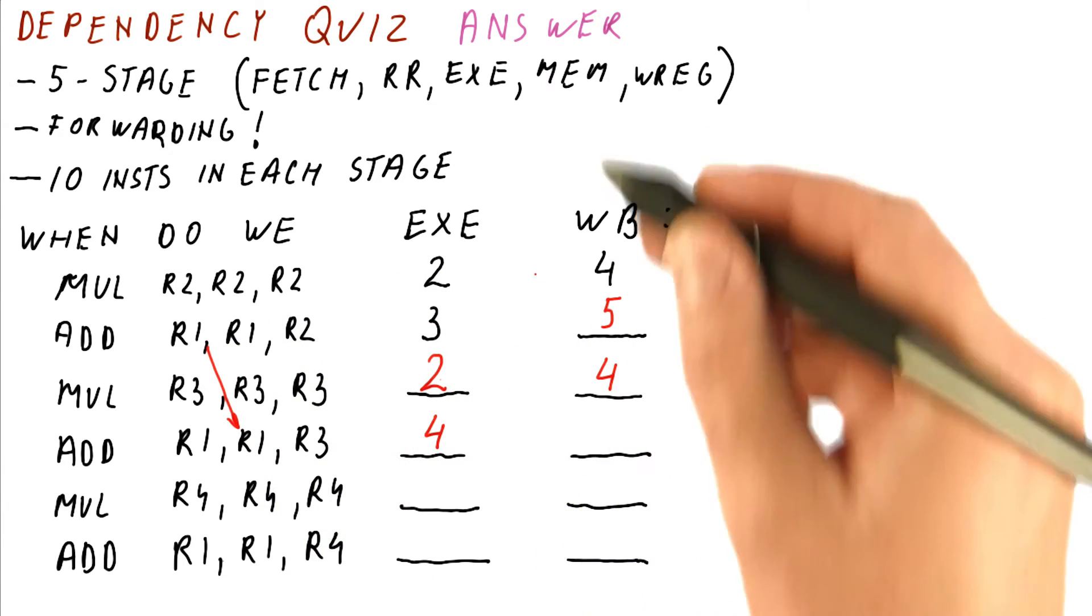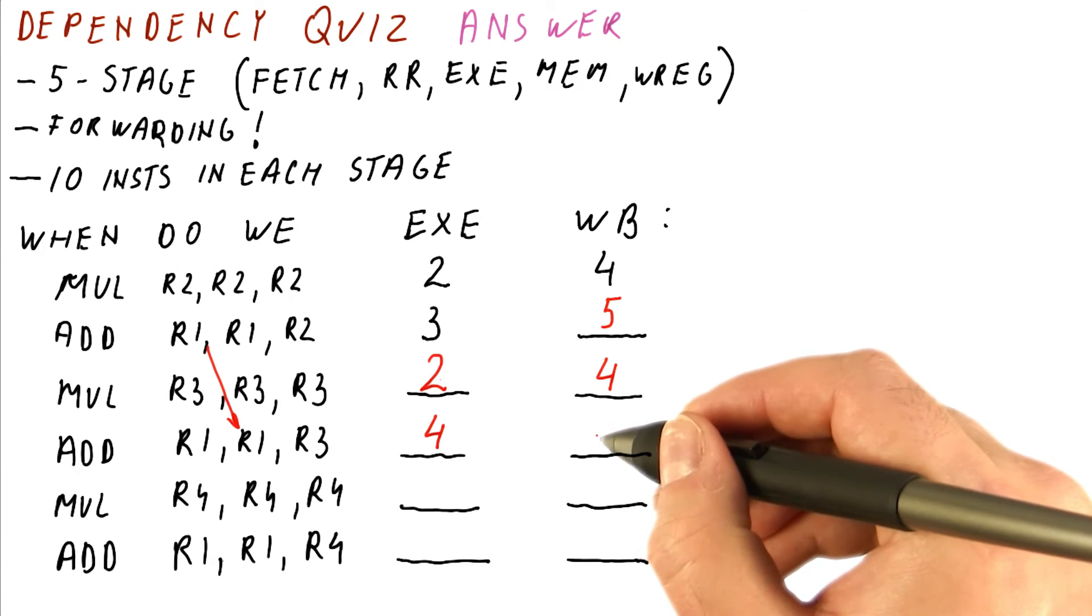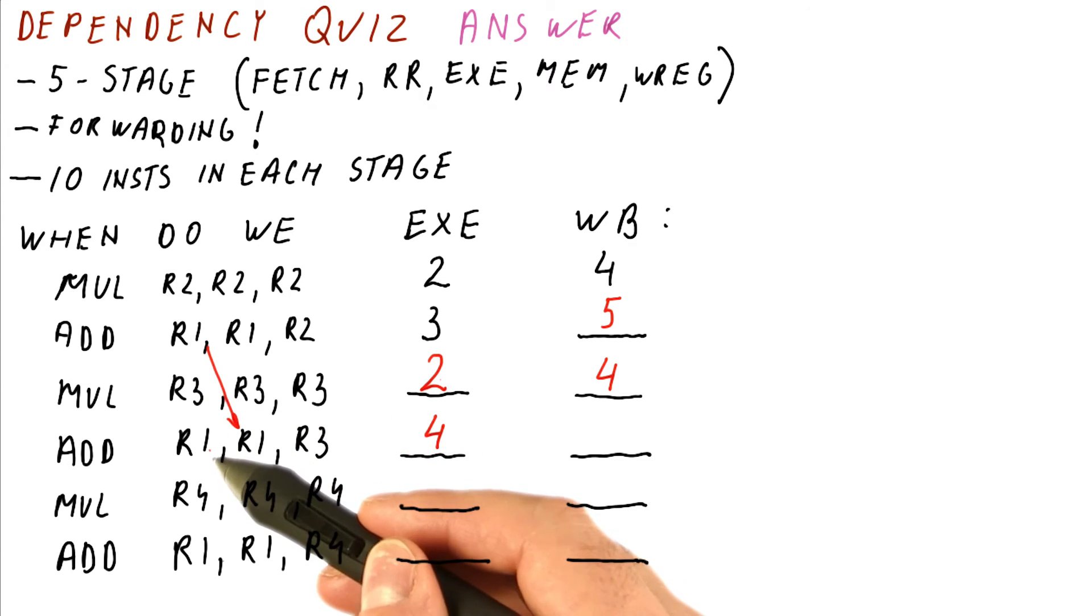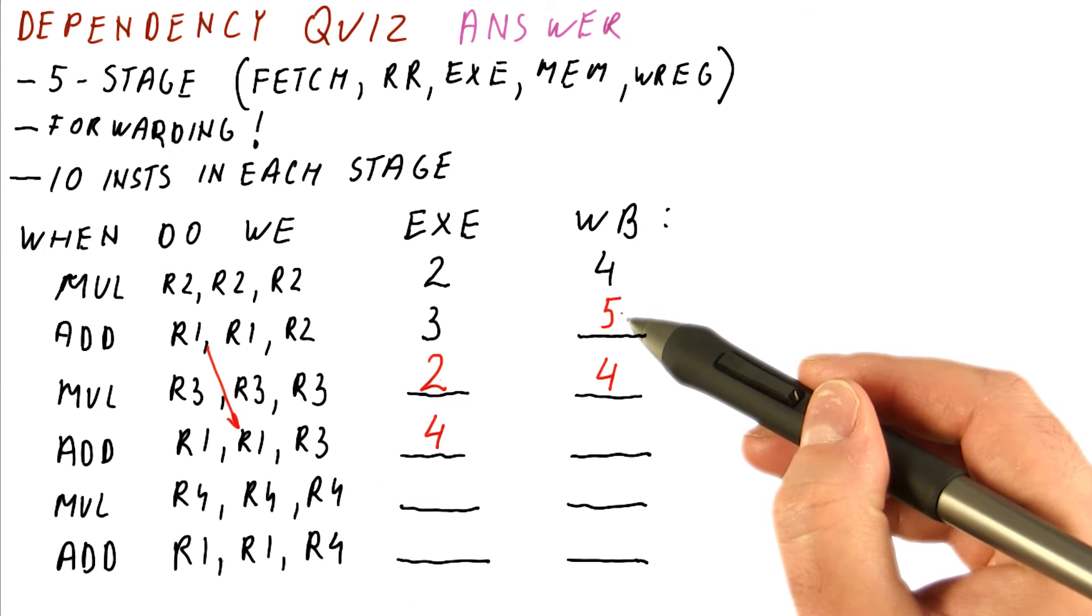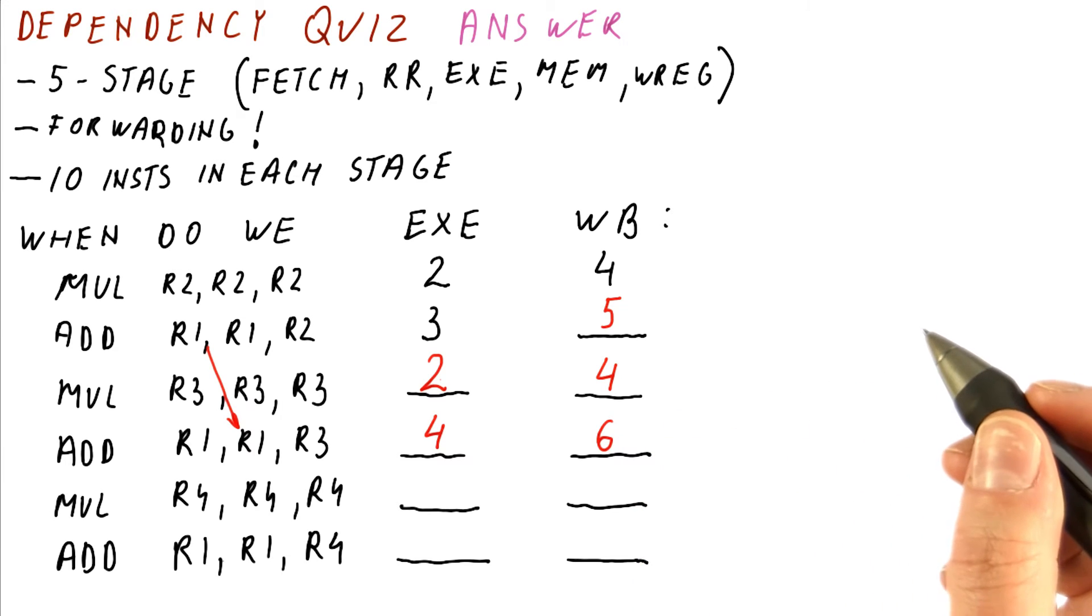Then it's going to be cycle five when it's in the MEM stage and it's able to write its result in cycle six. It's going to overwrite the result from the add here. But because the add is writing in cycle five, it's okay if you write in cycle six. So everything is fine here. We can write in cycle six.